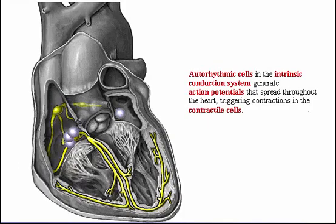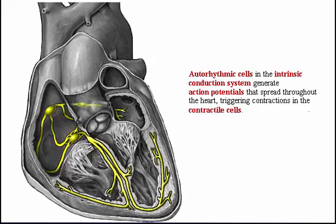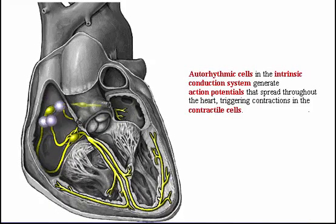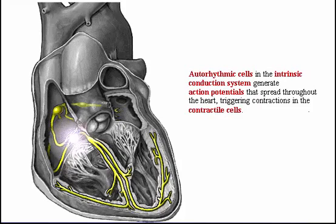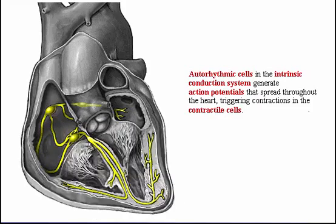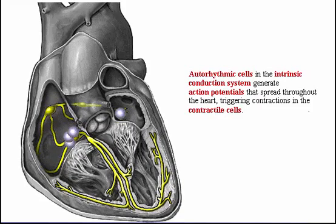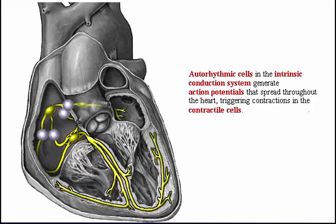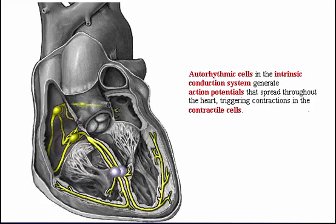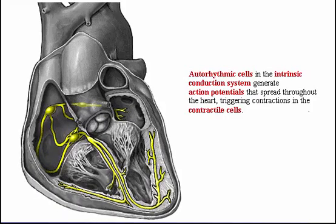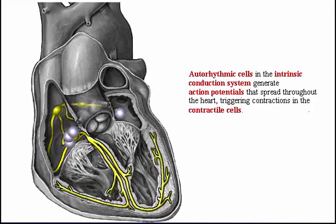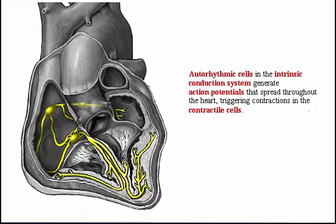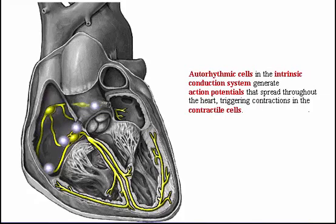Cardiac auto-rhythmic cells in the intrinsic conduction system generate action potentials that spread in waves to all the cardiac contractile cells. This action causes a coordinated heart contraction. Of all the cells in the body, only heart cells are able to contract on their own without stimulation from the nervous system.